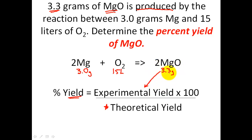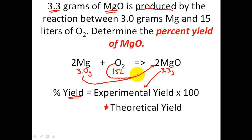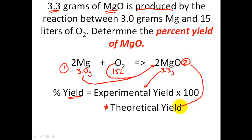3.3 grams of magnesium oxide was made in lab. Theoretical yield asks: how much magnesium oxide should I have made? You're going to take your given — 3 grams of magnesium — and do a stoichiometry problem that takes you to blank grams of magnesium oxide. You're also going to do another stoichiometry problem for oxygen, also to magnesium oxide. This ends up being the same as a limiting reactant problem: find out which reactant runs out first, and how much magnesium oxide it should have produced. Our game plan: first, find the limiting reactant; second, use the MgO amount in the percent yield formula; third, solve for percent yield.